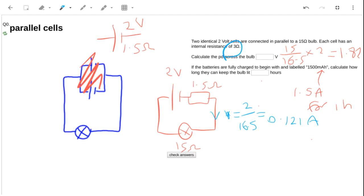What am I doing writing V there, that's I. Now that current going back to the original diagram, that current is going to split so each battery only has to provide half of that current, so each battery only provides 0.0606 amps.